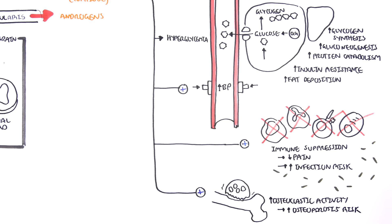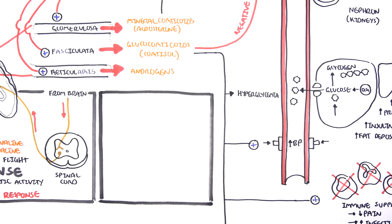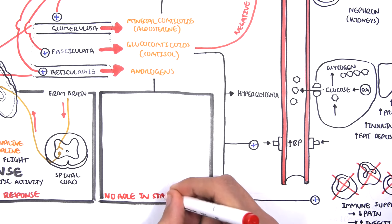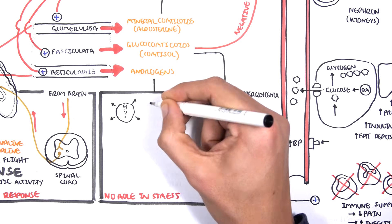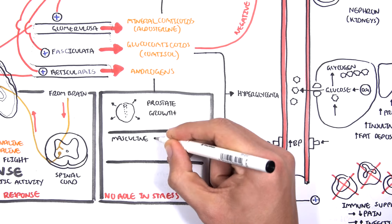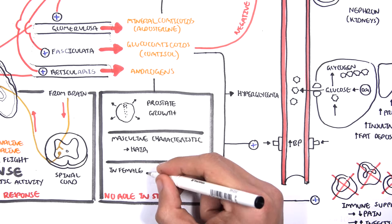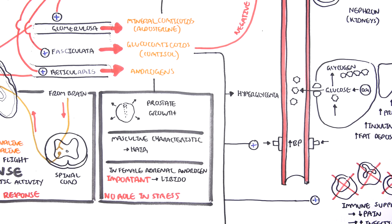The final hormone secreted by the adrenal cortex comes from the zona reticularis, which releases androgens. Unlike aldosterone and glucocorticoids, androgens have minimal role in stress. Androgens promote prostate growth in men and help with the development of masculine characteristics, such as a deep voice and hair growth. In females, adrenal androgens are important in libido, and a decrease in androgen production will result in a decrease in sexual drive.